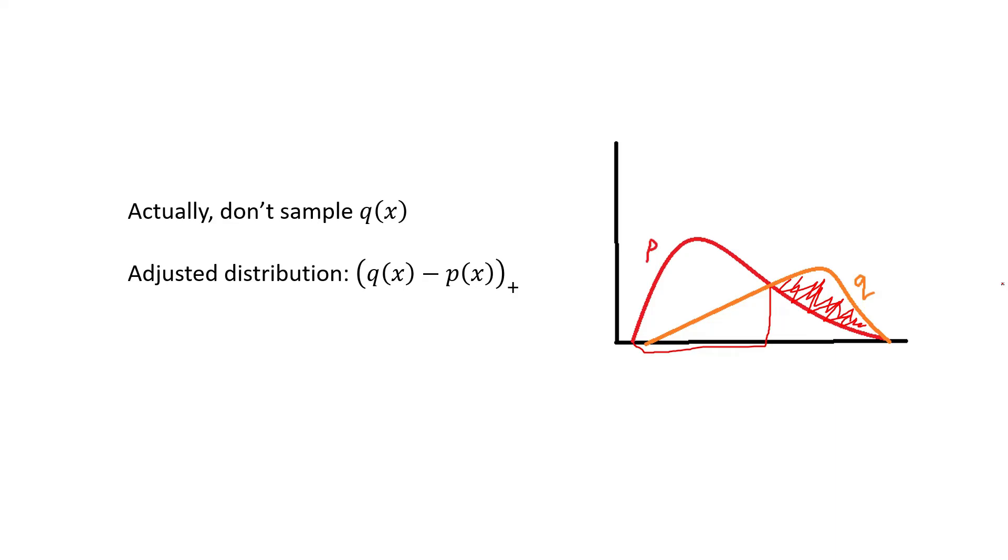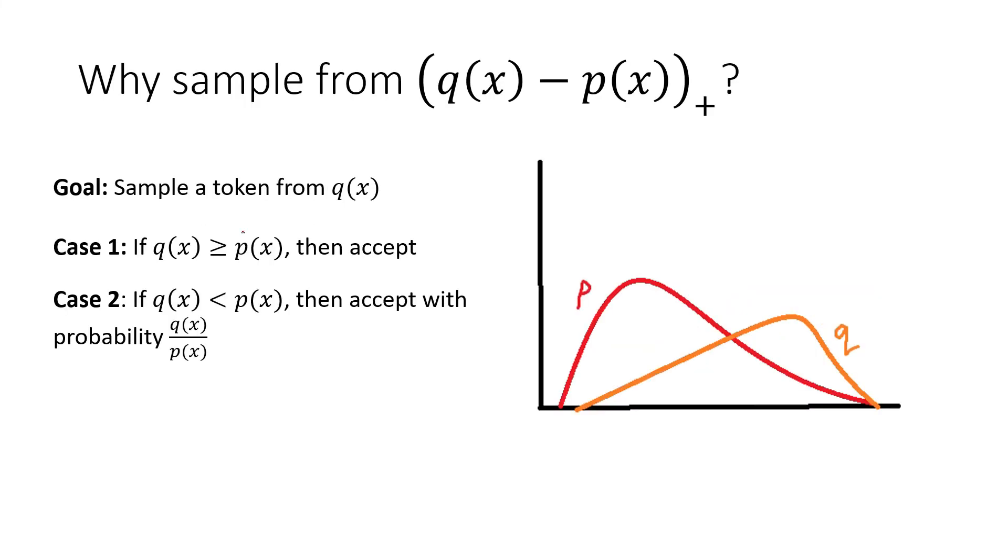Now I will admit that this looks quite strange, and I've never seen anything like this before. So I'll try to explain intuitively why this makes sense. So remember that our goal here at this point is to sample a token from the distribution q(x), the target distribution. And we had these two cases depending on whether q(x) or p(x) is bigger.